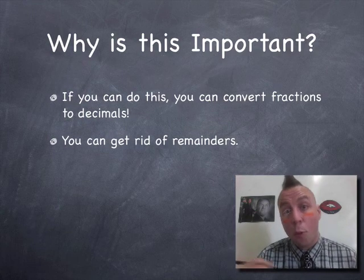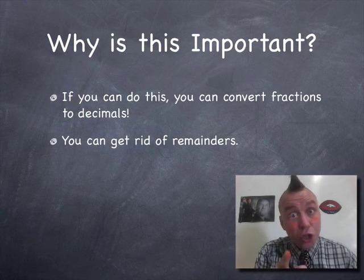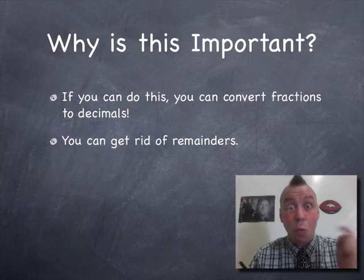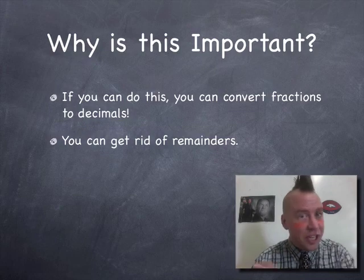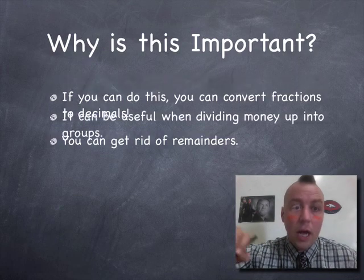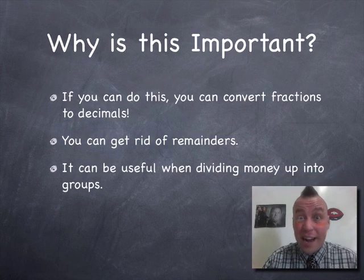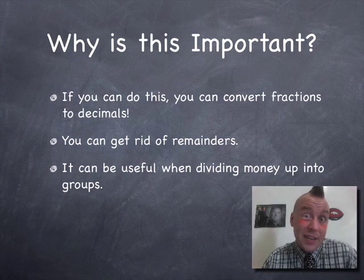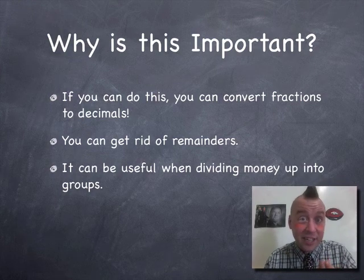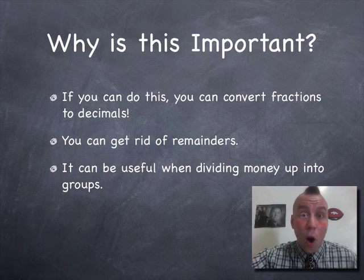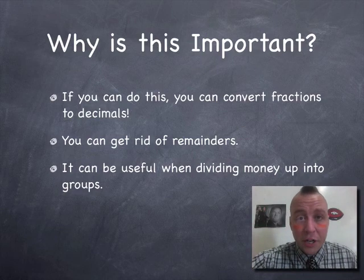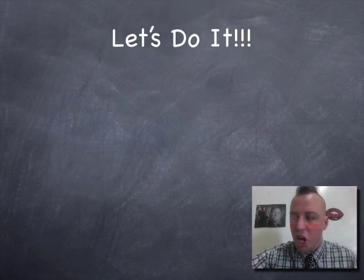Secondly, it's going to help you to get rid of remainders and we're going to do that right in just one minute. I'm going to show you how to take a remainder from a division problem and turn it into a decimal instead. It's kind of cool. And then finally, when you're dividing up money into groups, you're really dividing with decimals, right? If you have change left over, then you are going to wind up with decimals afterwards. It's going to help you to break up money into groups. So let's get right into this. I don't have all day. So let's do this.